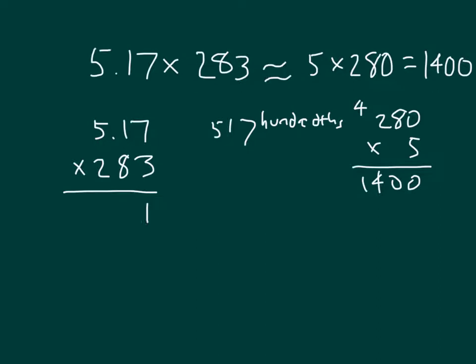3 times 7 is 21. 1, regroup the 2. 3 times 1 is 3, plus 2 is 5, and 3 times 5 is 15.